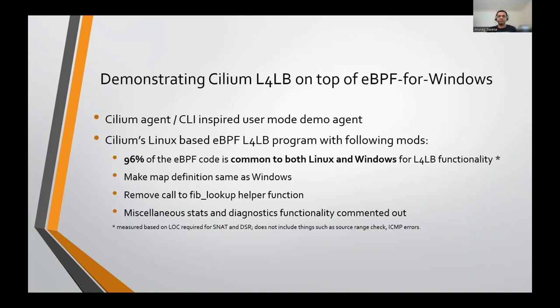The Cilium eBPF program used on Windows is almost identical to the program used on Linux. 95 to 96 percent of the code is common to both Linux and Windows, with a few changes like changing map definitions to match the ones on Windows, removing the call to the fib lookup helper function, and commenting out some statistics and diagnostics functionality. For the demo, we have also disabled some optional functionalities like source range check and ICMP errors.